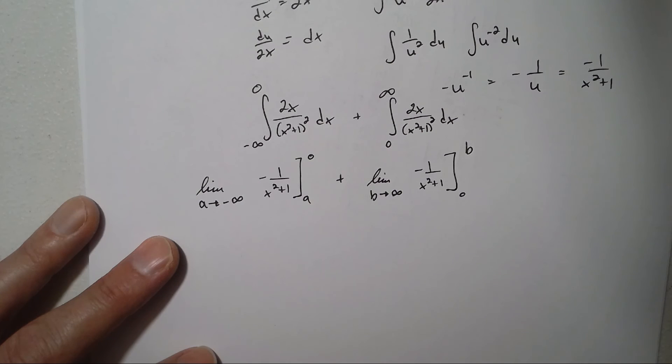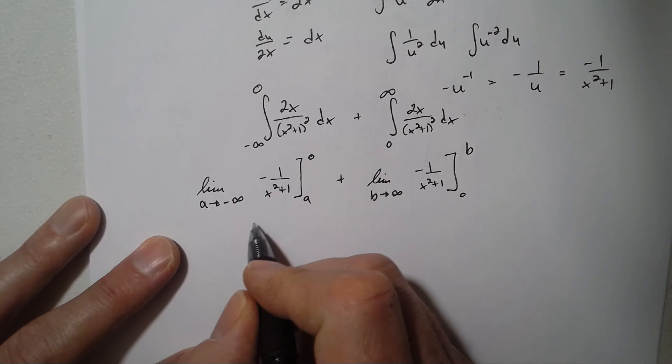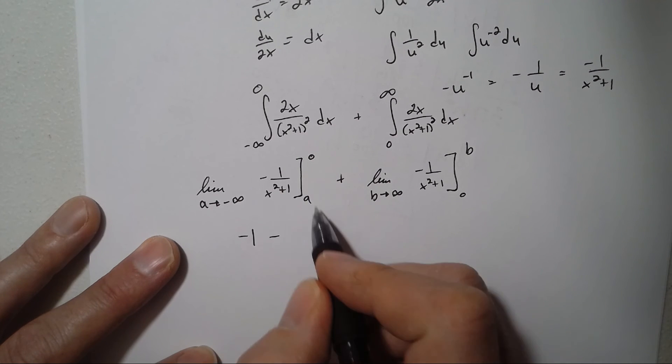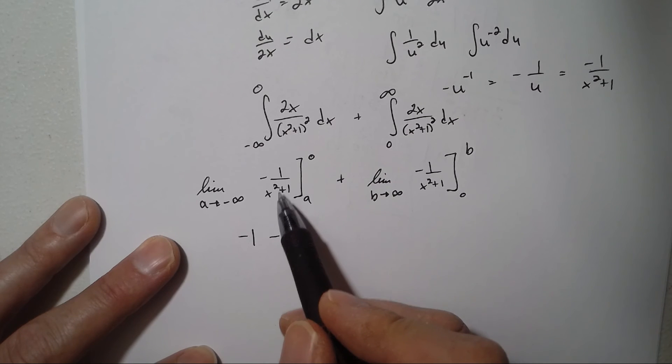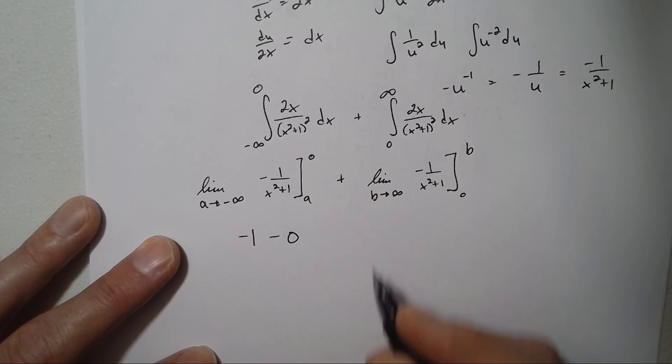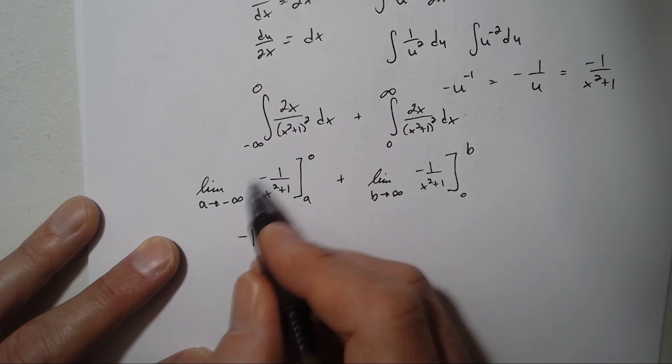Evaluating them, if I drop in the zero, I get negative 1. Minus, if I drop in negative infinity, I'm going to have negative 1 over negative infinity, which is 0. Constant over infinity, whether it's positive or negative, is 0. So this integral is negative 1.